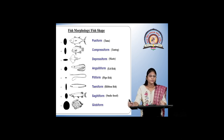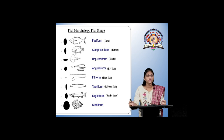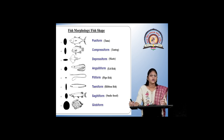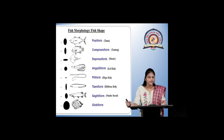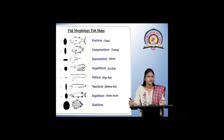The first is fusiform, which is seen in the tuna, in which the middle part of the fish is somewhat globular and it tapers at both ends. The second is compressive form, seen in the tortoise fish. Next is the depressed form, seen in skates, which is somewhat kite-shaped. Next is the anguilliform, seen in eel fishes, which is cylindrical. Next is the filiform, also known as pipe fish. Next is the taeniform, which is ribbon-like. Next is the sagittiform, which has a snake-like head. Next is the globiform, in which the fish shape is circular.